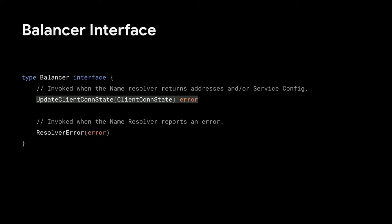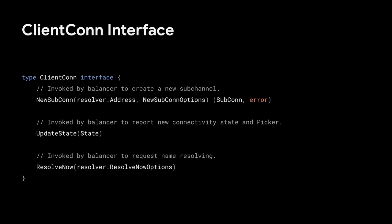The next one is the balancer interface — called load balancer in Java and load balancing policy in C++ — and this is basically the heart of the LB policy implementation. It has a few important methods corresponding to events from the name resolver. When the name resolver comes back with addresses and service config, the gRPC channel calls update client conn state to give the LB policy that new state. The LB policy is free to use that state however it wants — it can decide to connect to those addresses immediately or do something else. The second API is resolver error: when the name resolver returns an error, the gRPC channel uses this API to notify the LB policy.